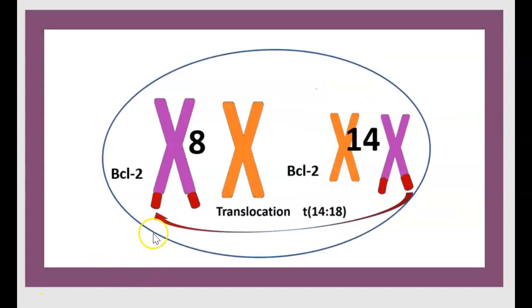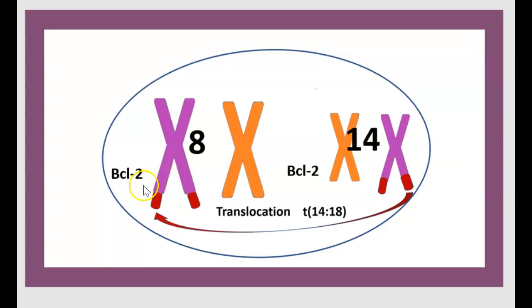Burkitt lymphoma involves a translocation between chromosome 8 and 14, especially involving BCL-2.